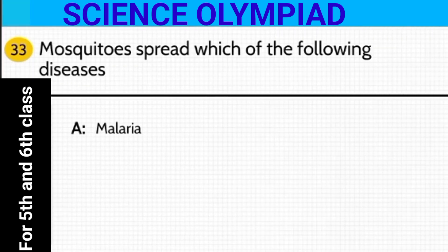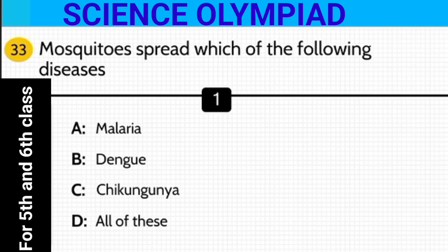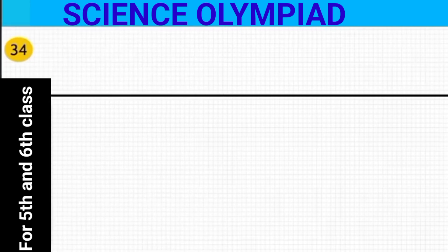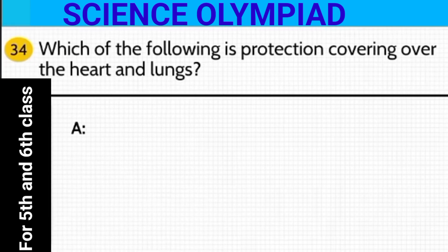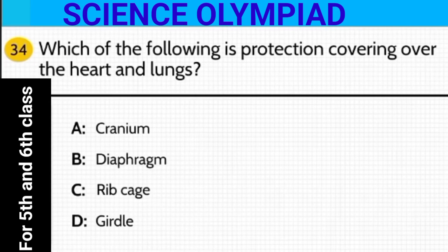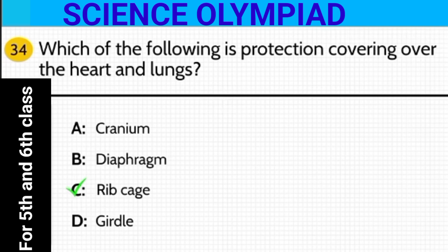Which of the following is a protective covering over our heart and lungs? Which of them provides protection to our heart and lungs? The answer is the rib cage.